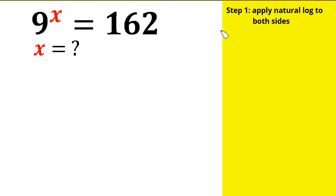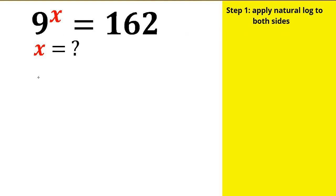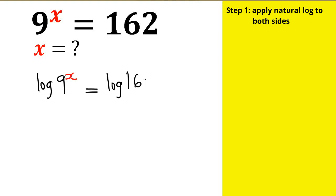The first thing I'm going to do is to apply a natural log to both sides — that is, to this side and at the same time to this side. And I'm going to have log of 9 raised by the power of x equals log of 162.